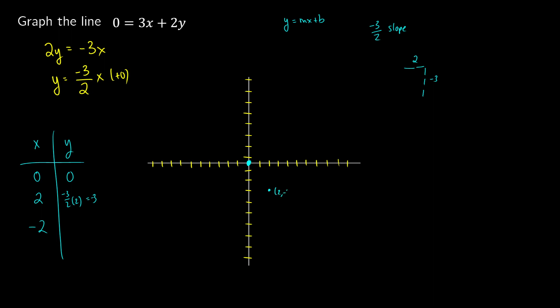So we have the point 2, negative 3. If we do x equals negative 2, we should expect the point negative 2, 3 — going left 2 and up 3. Let's check: negative three halves times negative 2 gives 6 over 2, which is 3. So we get a nice line crossing through the origin with a steep negative slope, and we just had to isolate y to get our equation. Since there was no b value, it crosses at the origin.